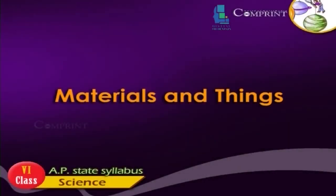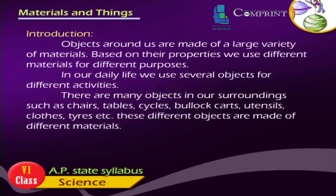Materials and Things. Introduction: Objects around us are made of a large variety of materials. Based on their properties, we use different materials for different purposes. In our daily life, we use several objects for different activities. There are many objects in our surroundings.